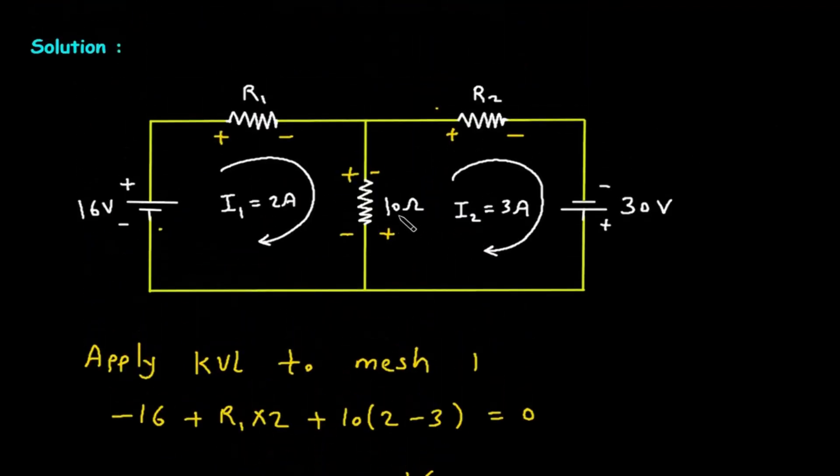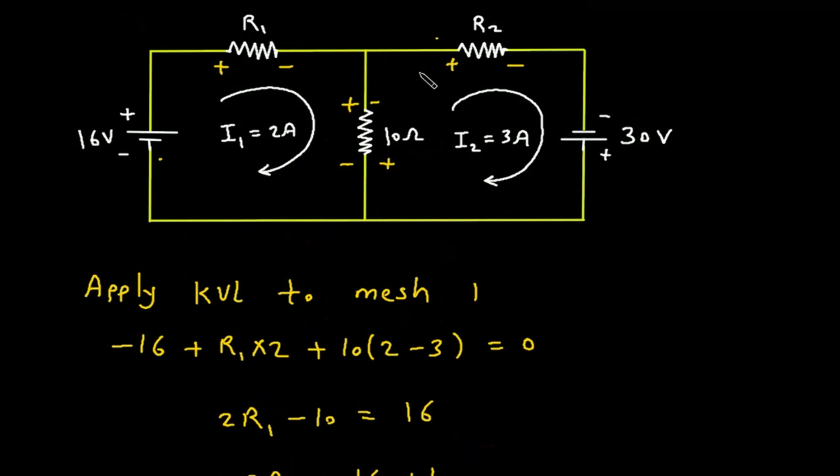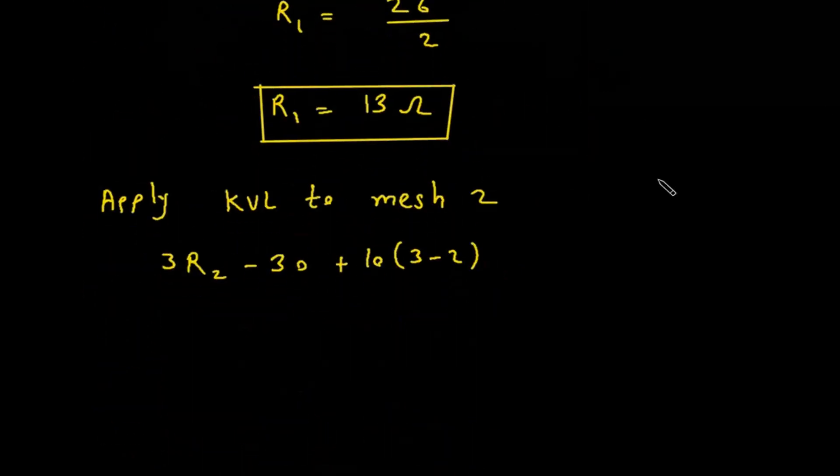Then plus 10. 3 minus 2. Then is equal to 0. Mesh is complete, so is equal to 0.